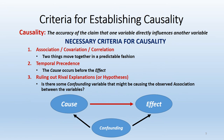Why do we collect data in the first place? As researchers, we want to understand what causes what. If I'm trying to reduce crime rates, what will cause crime to go down? Causality, in its simplest sense, is the accuracy of the claim that one variable directly influences another variable. But establishing causality is far more complex in practice than it sounds on paper.